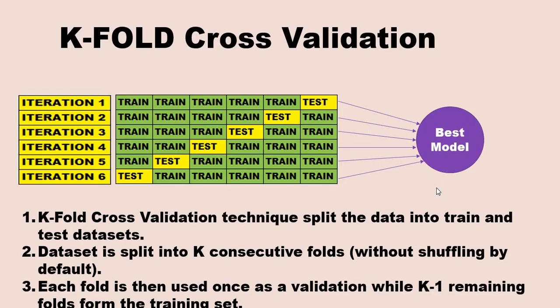So how does it work? KFold cross-validation technique splits the data into train and test datasets into different folds. If the dataset is split into k consecutive folds without shuffling by default — there is a shuffle parameter — and each fold is then used as a validation while k-1 remaining folds form the training set.